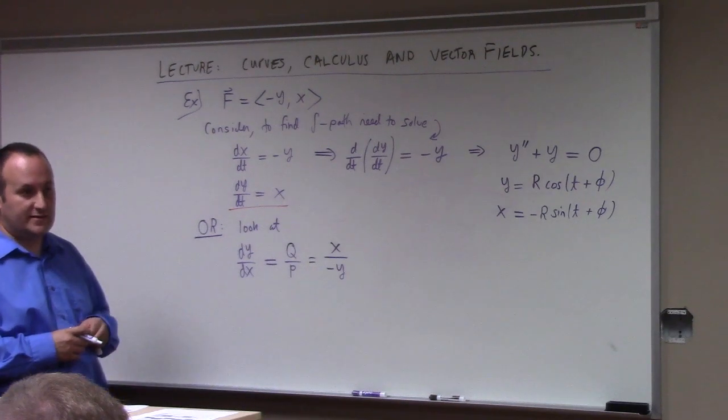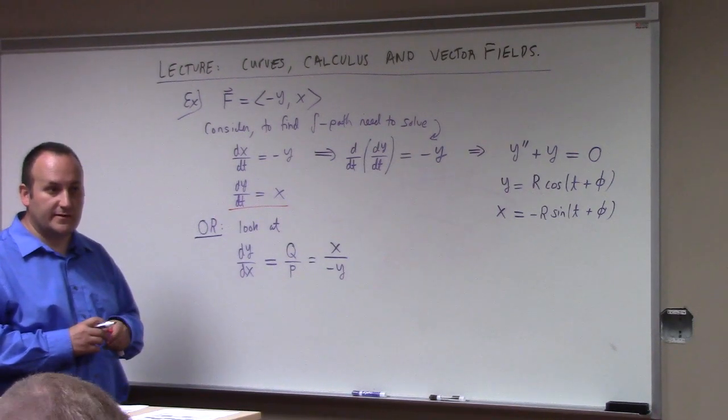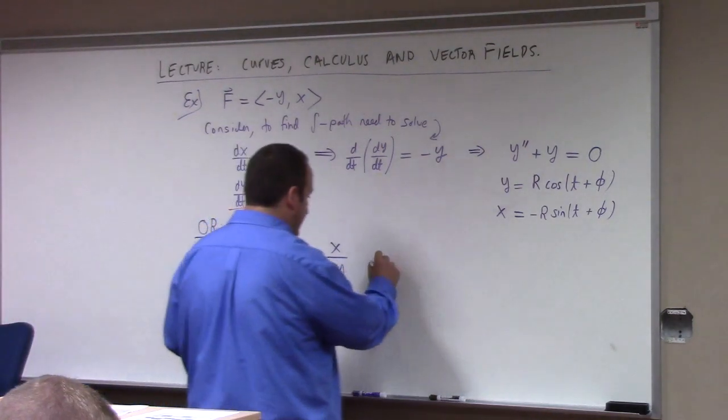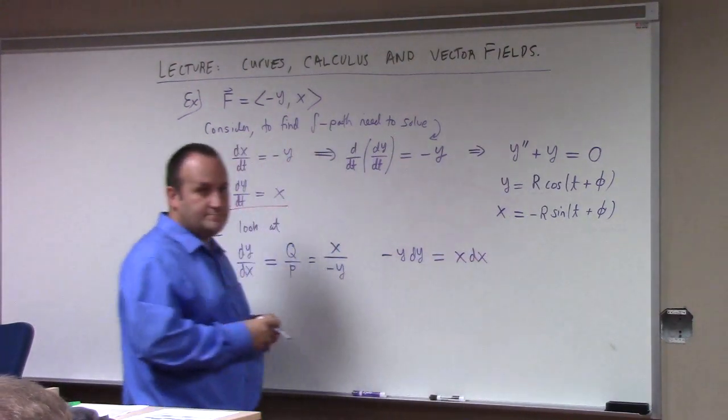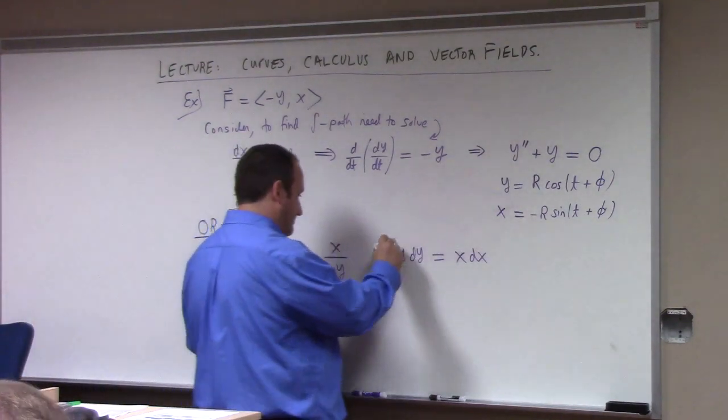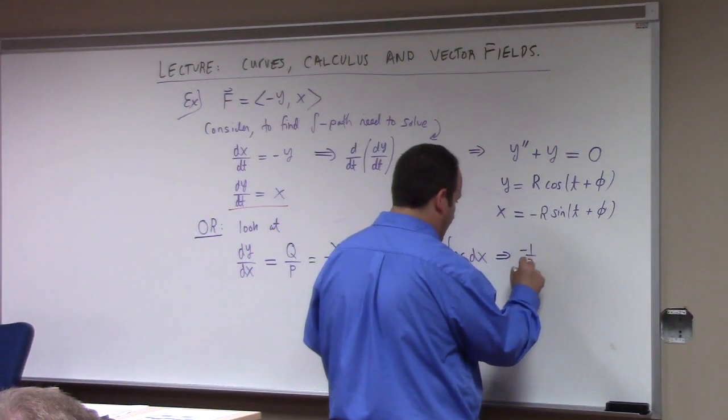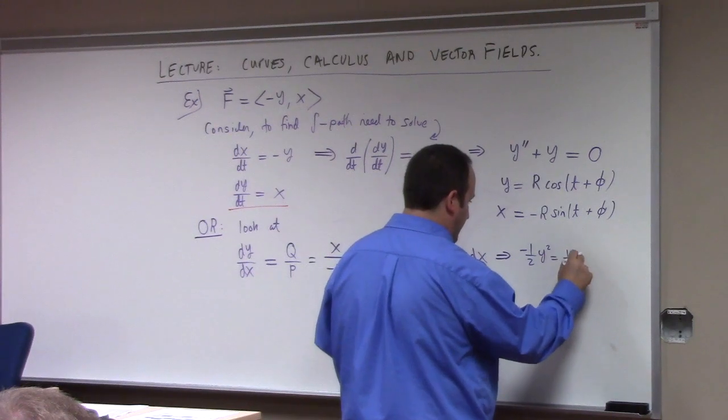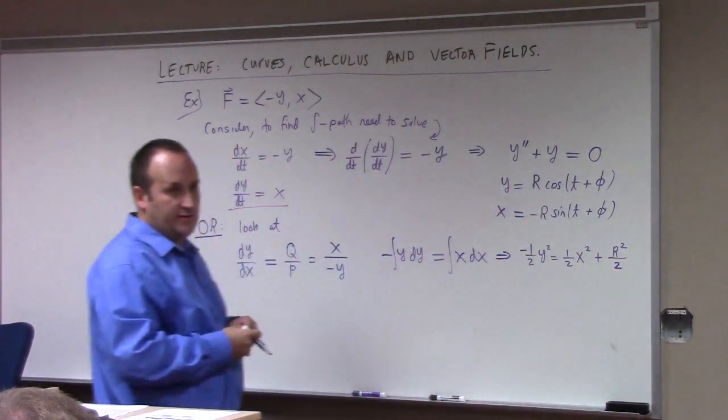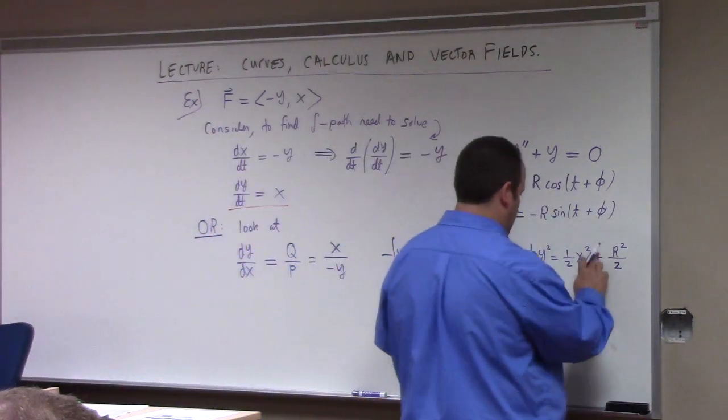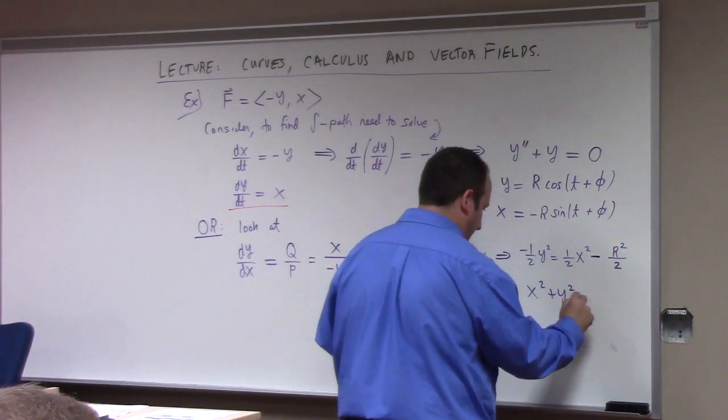Now, we don't need any kind of fancy-schmancy second-order differential equations mumbo-jumbo. We can just solve this thing by separation of variables, right? Separate, integrate. Separating gives me minus y dy equals to x dx. So integrate both sides. What do we got? Minus one-half y squared equals to one-half x squared plus r squared over 2. Obviously, that's how you should write the constant in this problem. Oh, did I say plus? I meant minus r squared over 2. There we go. So that implies that x squared plus y squared equals to r squared.